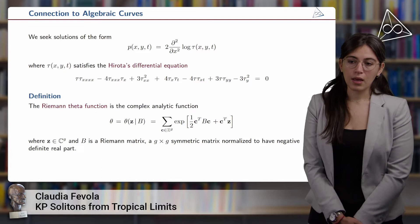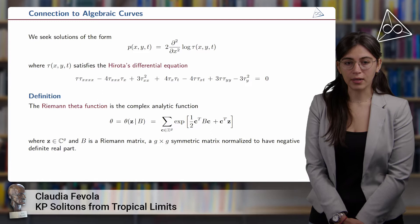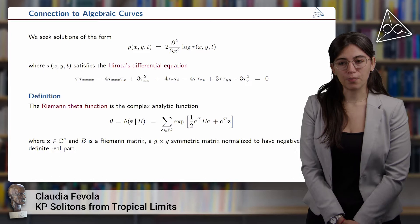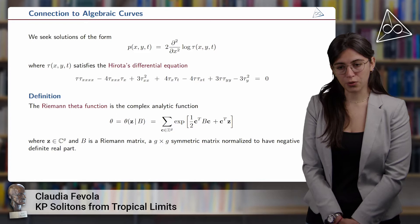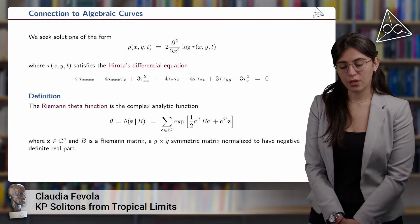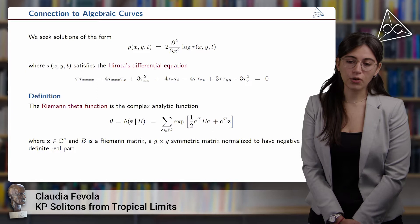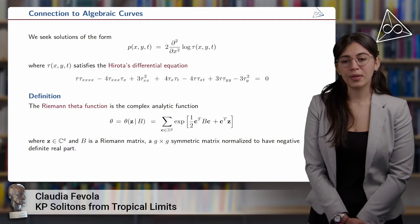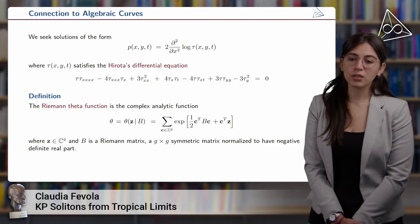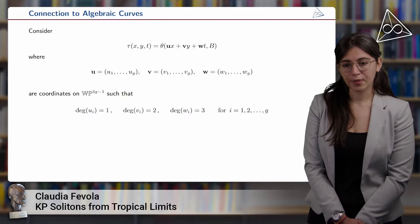One nice fact is that it is possible to construct a solution to the KP equation starting from an algebraic curve. To do this, one needs to define the so-called Riemann theta function, which is a complex analytic function depending on two parameters: z, which is a complex g-dimensional vector, and B, which is the so-called Riemann matrix — a g-by-g symmetric matrix normalized to have negative definite real part. This function theta appears as an infinite sum of exponentials over all integer lattice points.